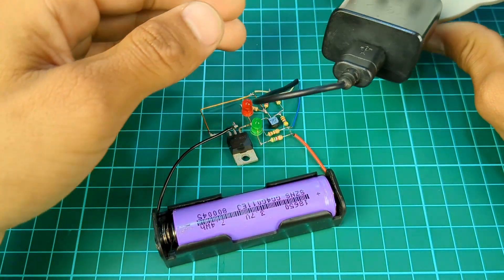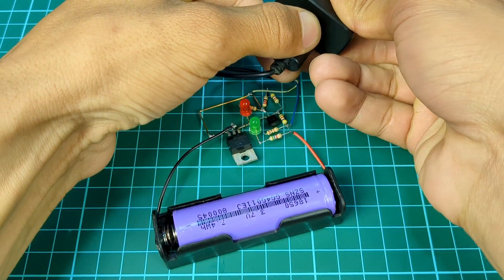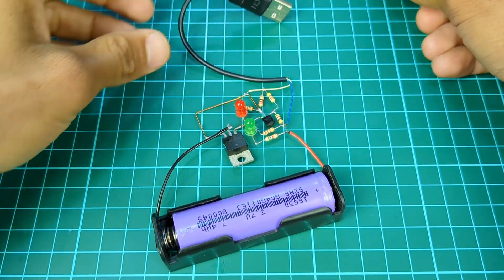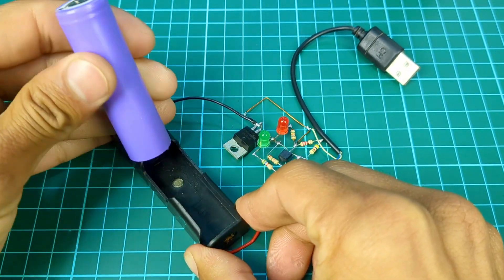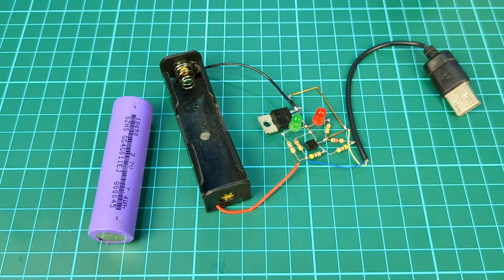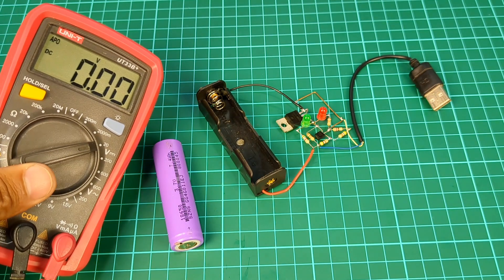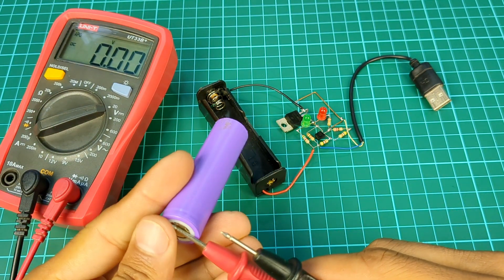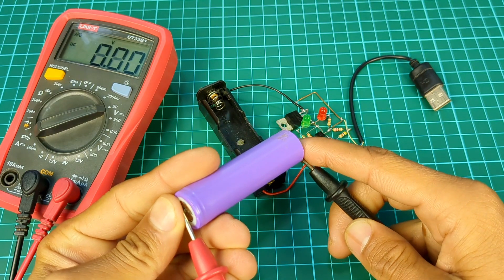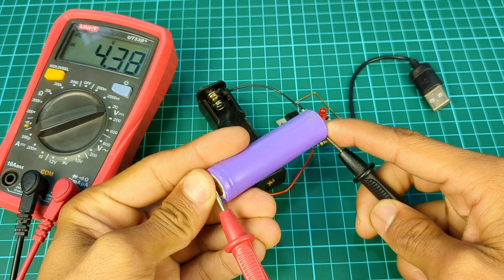Now disconnect the battery from charging and measure the battery's voltage. As you can see battery is fully charged.